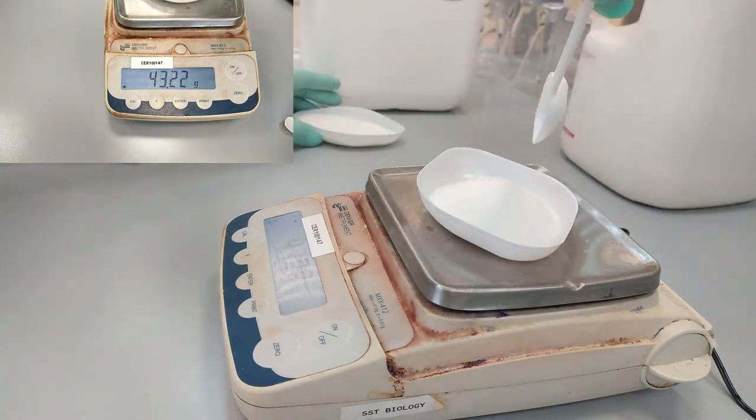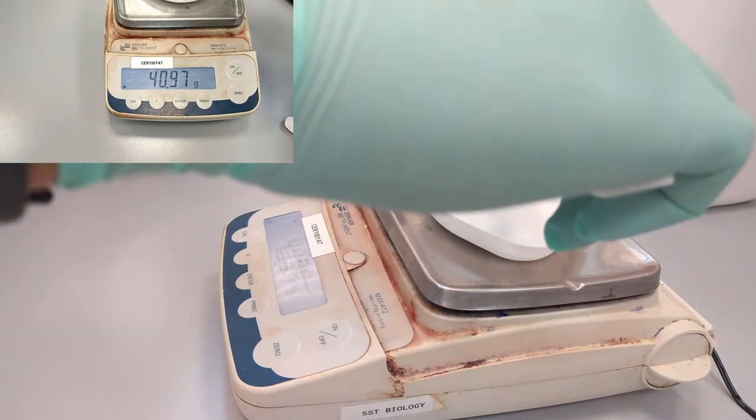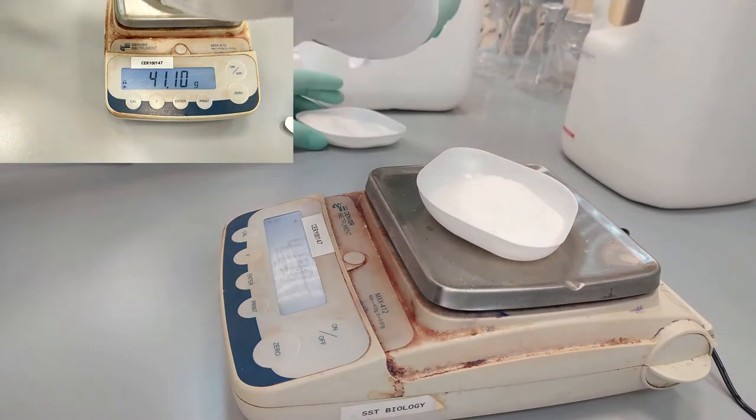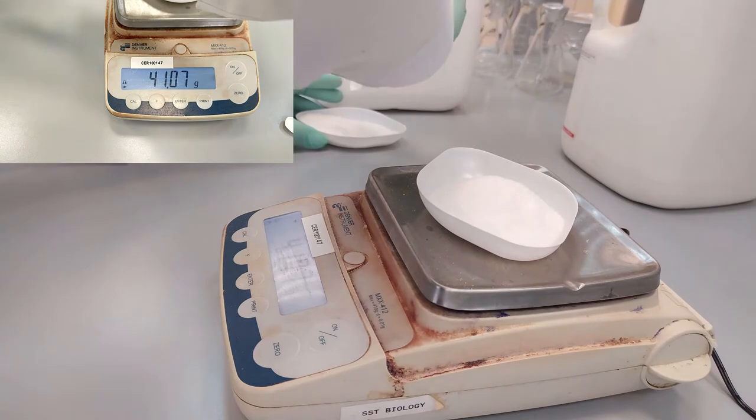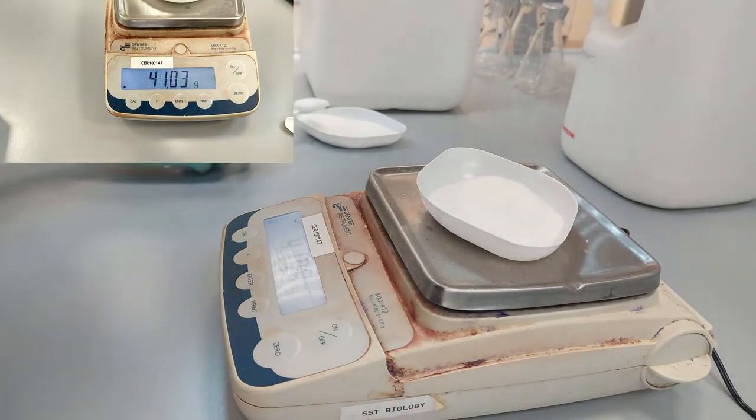For this particular concentration, we will need 41.07 grams of glucose. After weighing the appropriate amount of glucose, we are going to use the 250 milliliter beaker to transfer this glucose to.